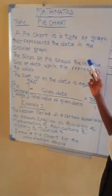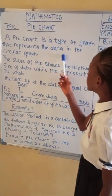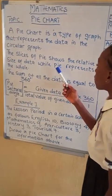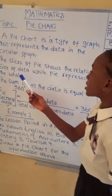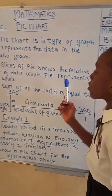In other words, a pie chart is a type of graph that represents the data in the circular graph.